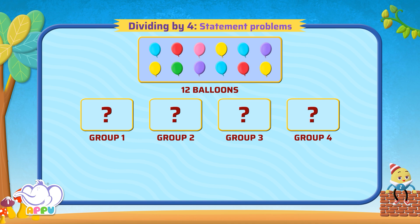To find the number of balloons in each group, we divide 12 equally among 4 groups.